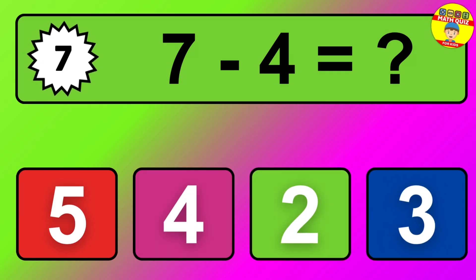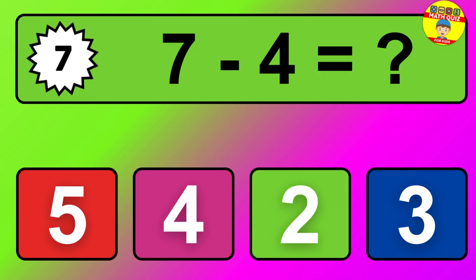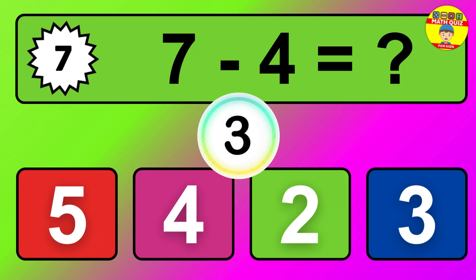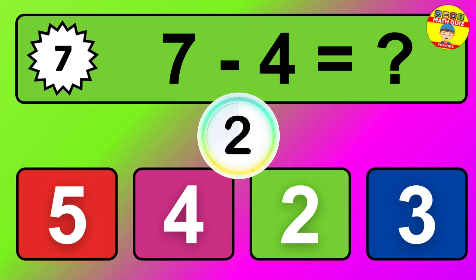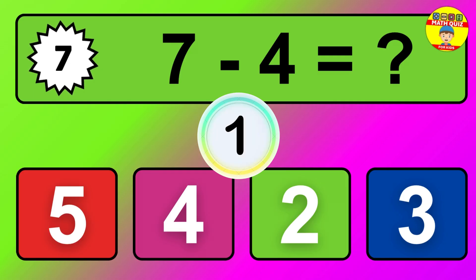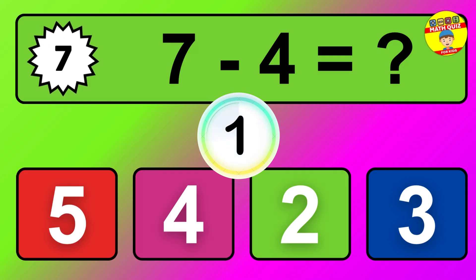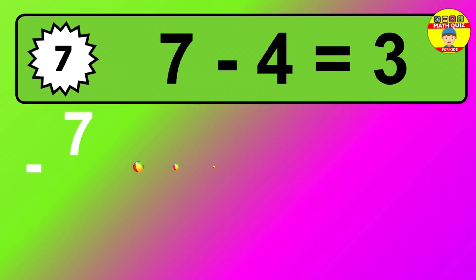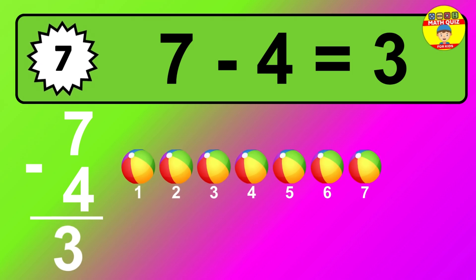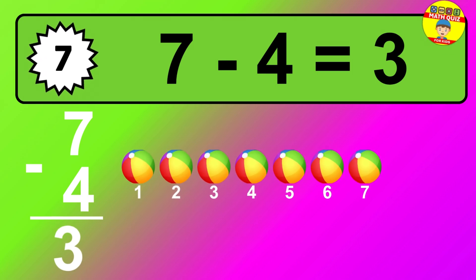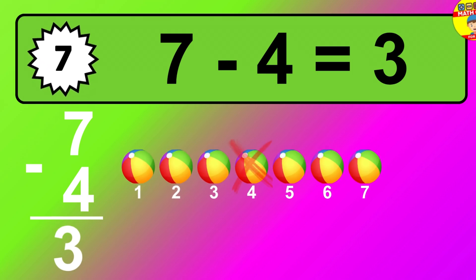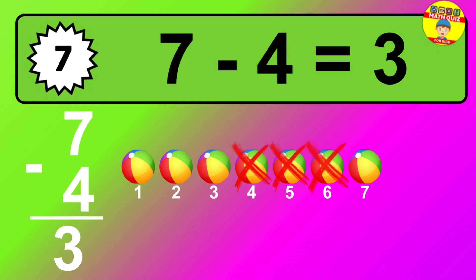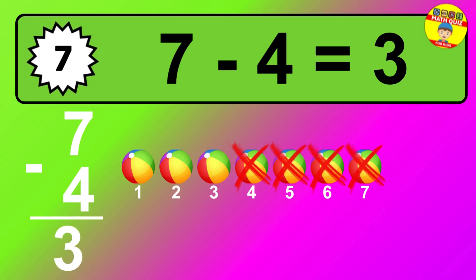Question 7. 7 minus 4 equals what? The answer is 7 minus 4 is 3. Let's count it: 1, 2, 3.